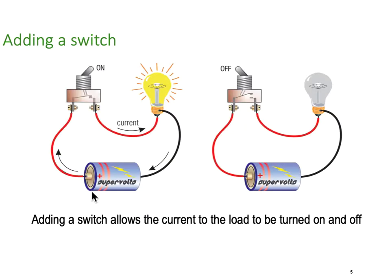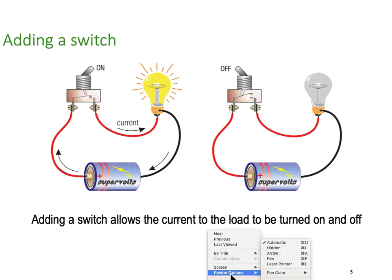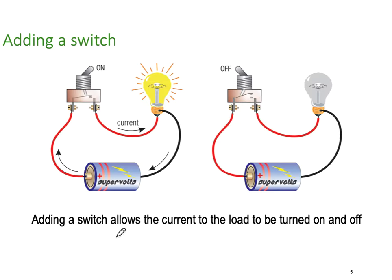We're now going to add a switch, which creates a purposeful open circuit. Adding a switch allows the current to the load to be turned on and off. It's very important to pick this up early: we are switching the current to the load — we are not switching the voltage, and we are not switching the load.